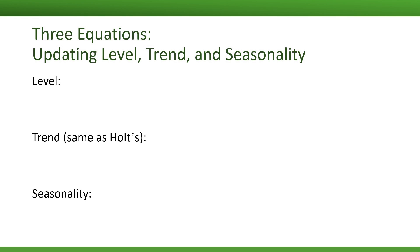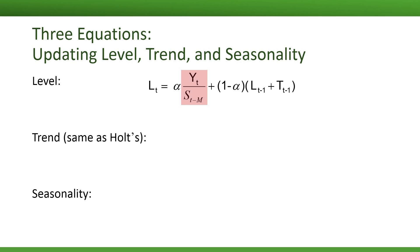In the Holt-Winters exponential smoothing, we have three smoothing constants and therefore three updating equations. In the level equation, there's one part that needs explanation. S is a seasonal component, so when we divide y by S, it means we're de-seasonalizing the value of y. In the level equation, we're therefore updating the previous level, L sub t minus 1, by adding the previous trend estimate, T sub t minus 1, and then combining with a de-seasonalized value of y_t.